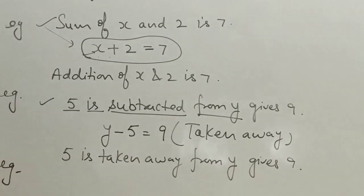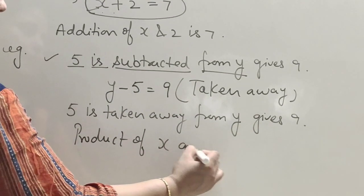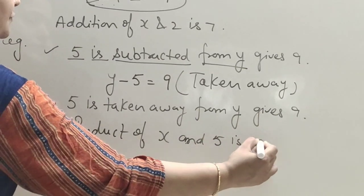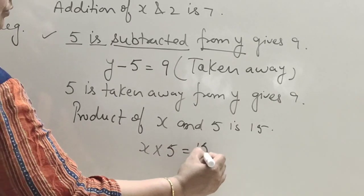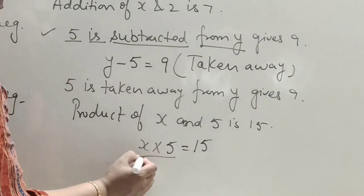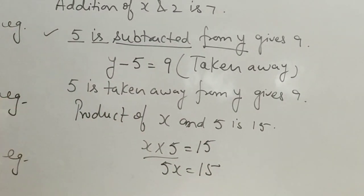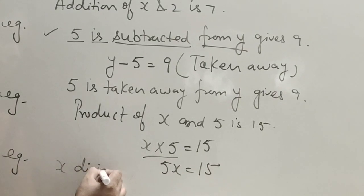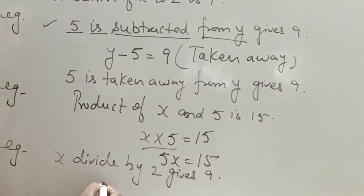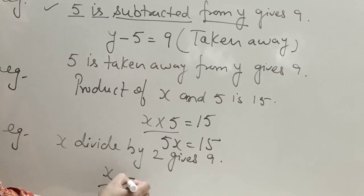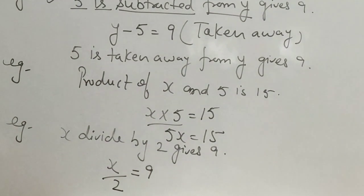Now the multiplication type: 'Product of x and 5 is 15.' We write x into 5 equals 15, or 5x equals 15. And for division: 'x divided by 2 gives 9' — we write x divided by 2 equals 9. By this way, you can form an equation from a statement, or write a statement from a given equation.